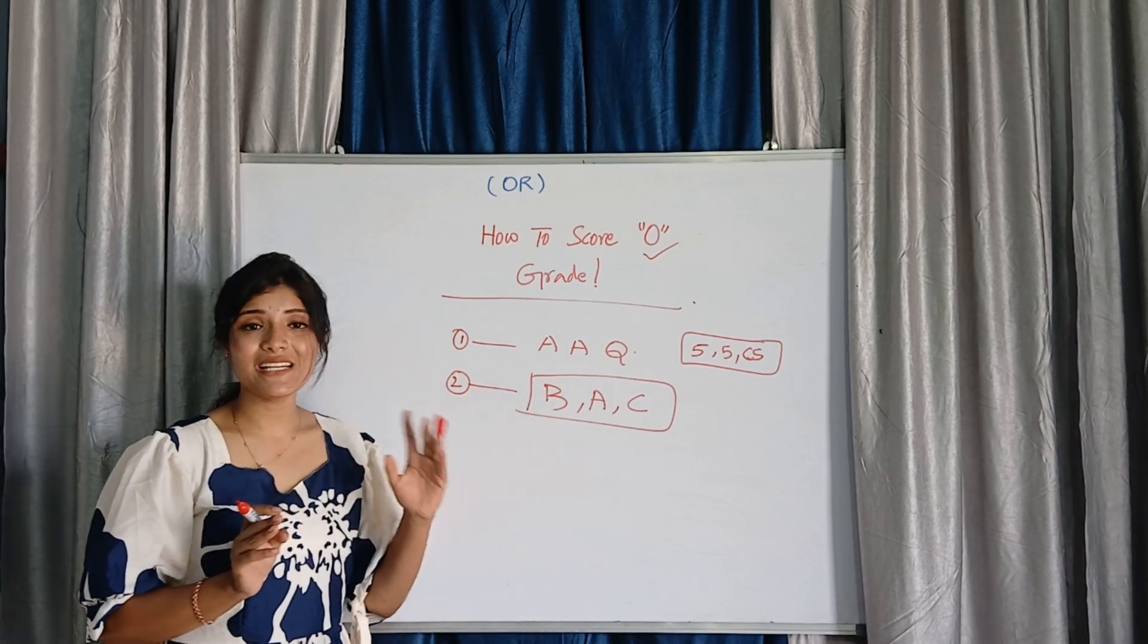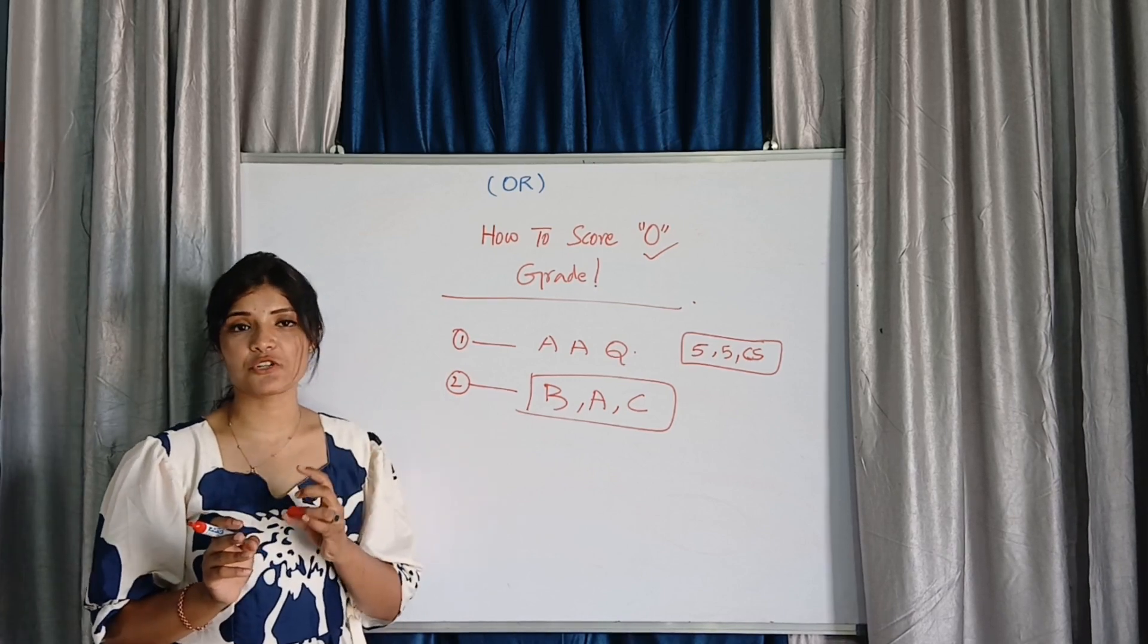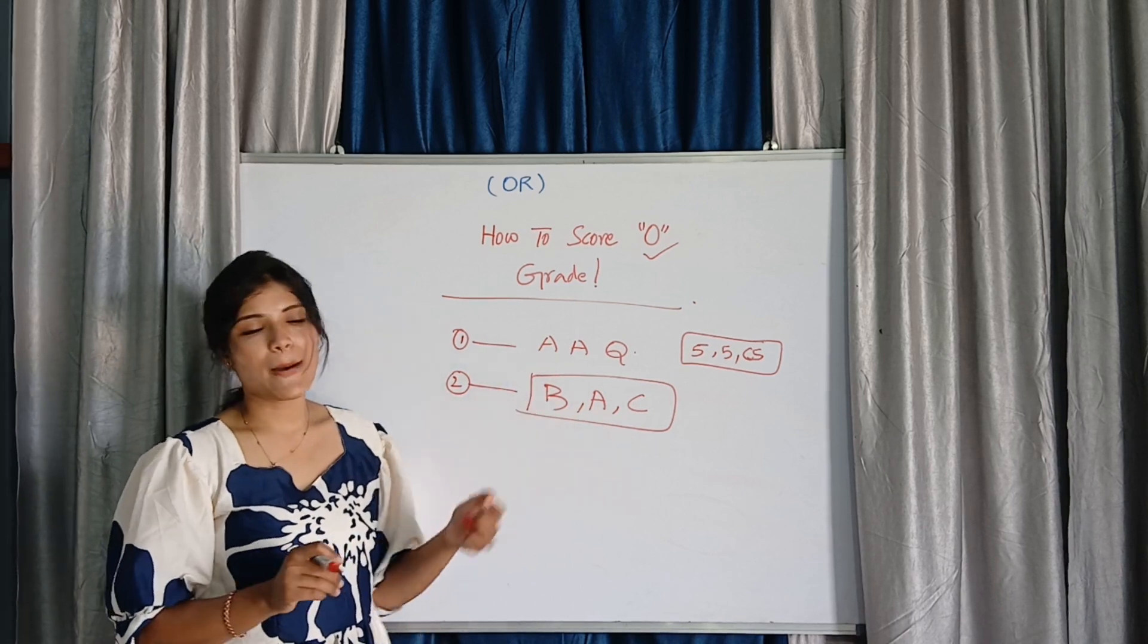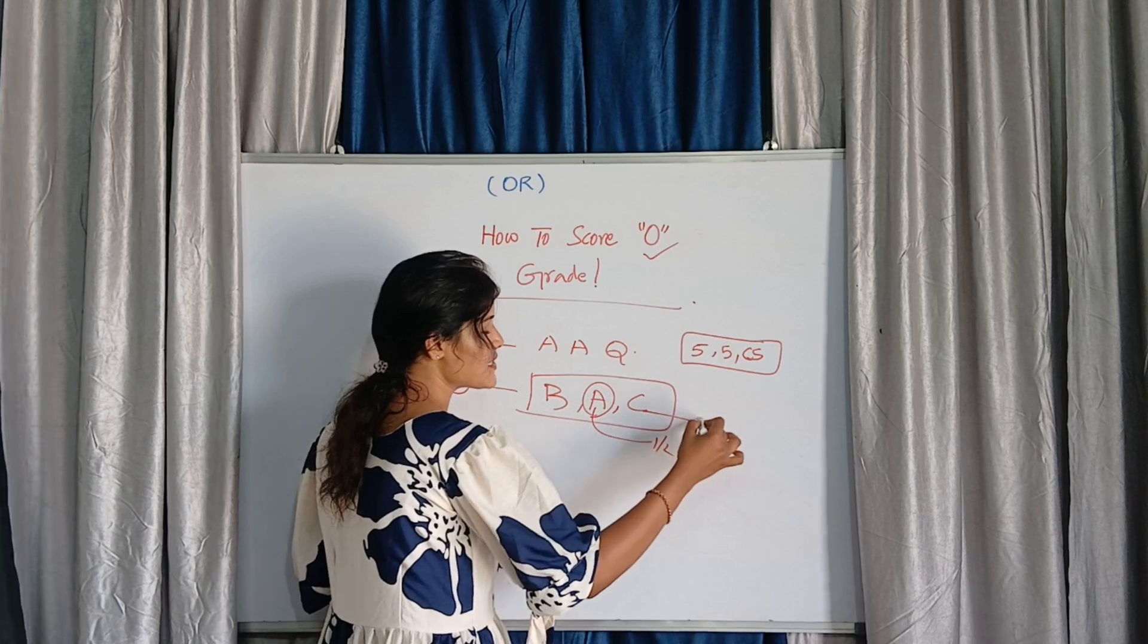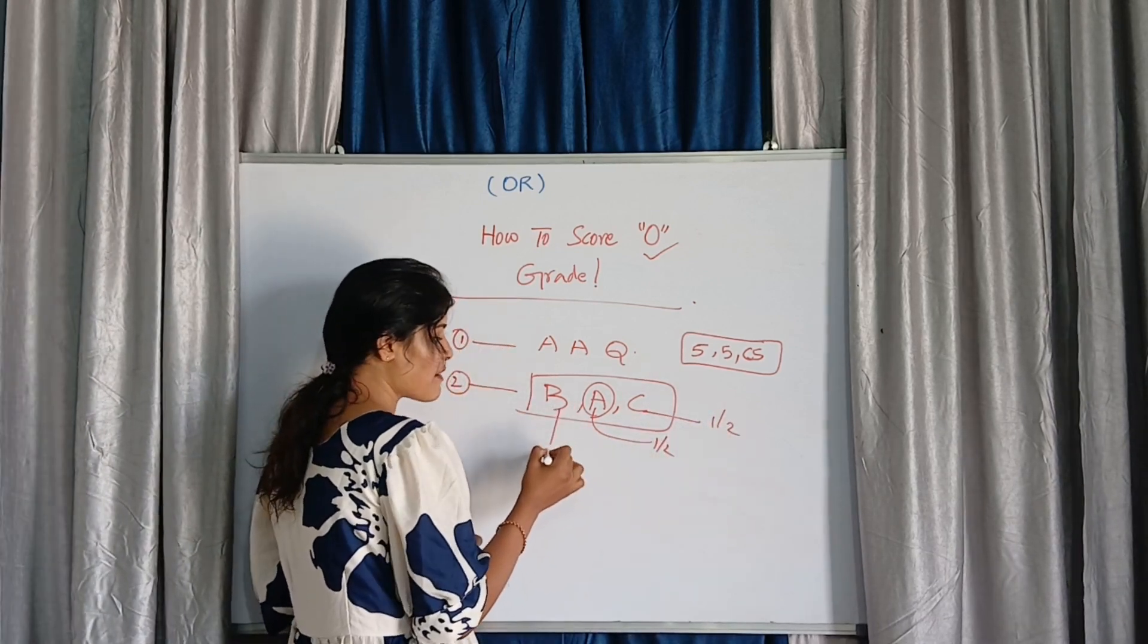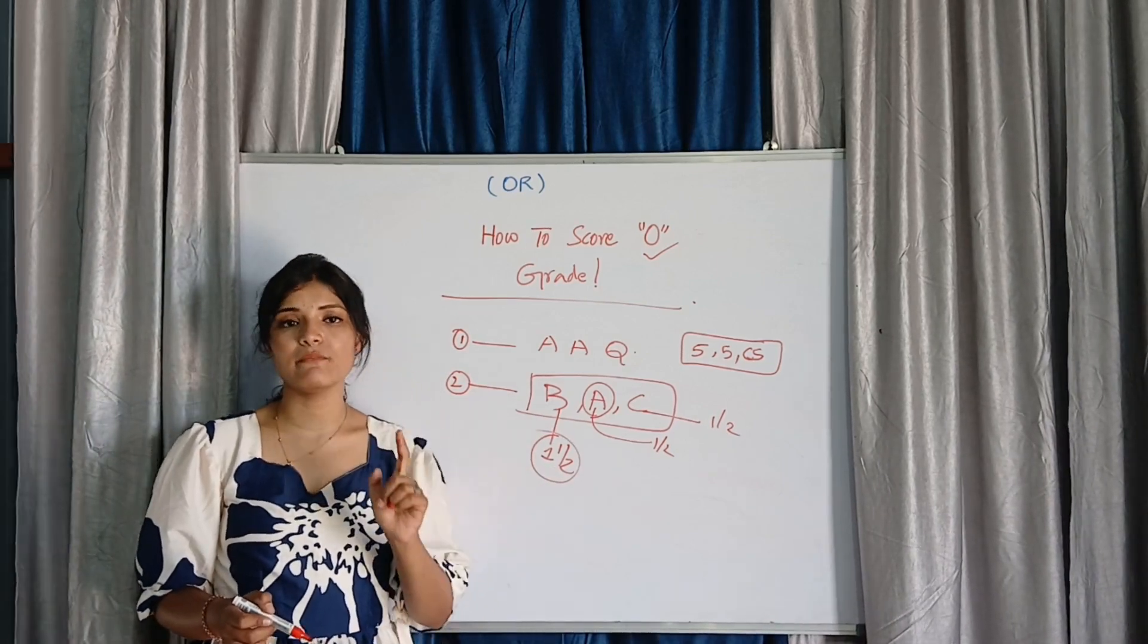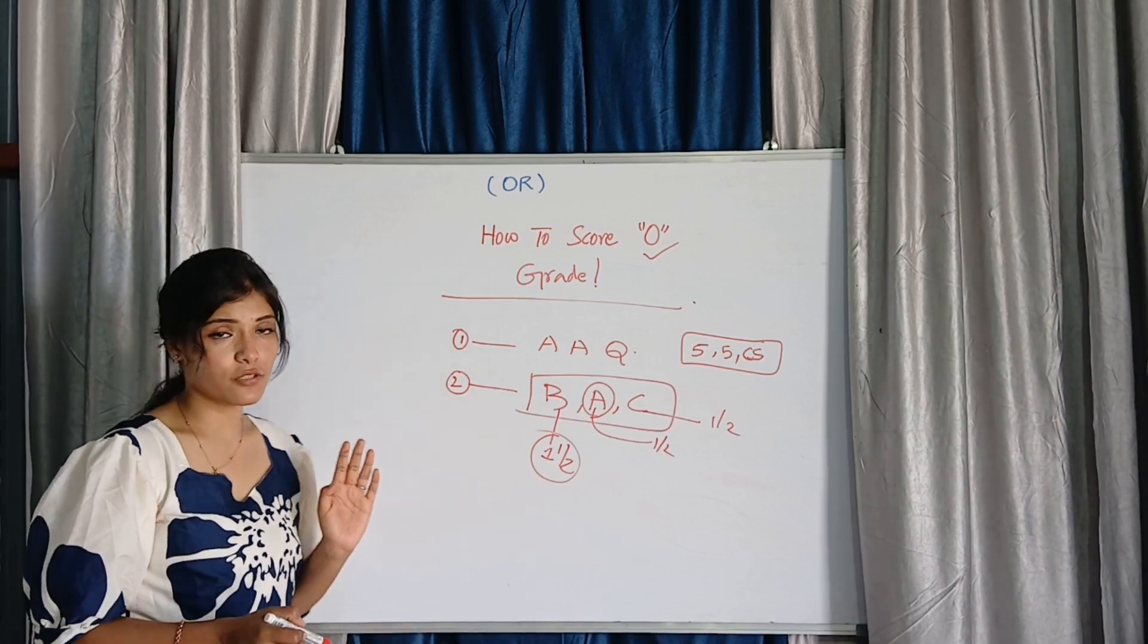Because part B is important more - 40 marks will be carried in that section only. So that's why you need to give more preference to part B. Then you can go with part A and part C. Part A you need to complete in half an hour, part C also need to complete in half an hour. Remaining 1 and a half hour you need to allot it for part B.